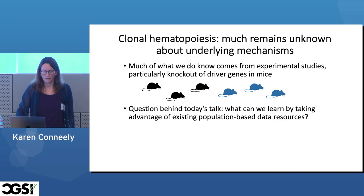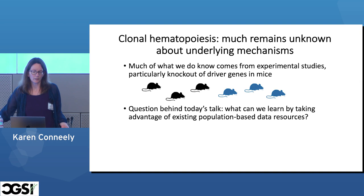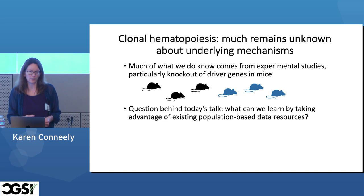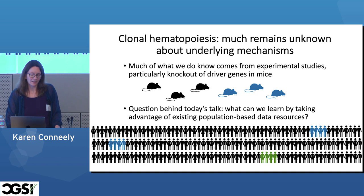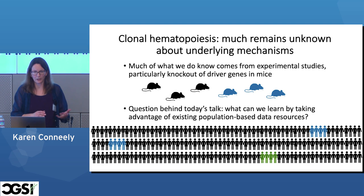A lot of what we know so far comes from experimental studies — these genes have been knocked out in mice and you can learn a lot from that. But an important question behind today's talk is: what can we learn about these mechanisms by taking advantage of existing population-based data resources? An advantage of these resources is the extremely large cohorts of sequenced individuals we can examine. Some disadvantages are that very few individuals in even large cohort studies harbor CHIP mutations, and within these individuals only a small proportion of their blood carries the CHIP mutation — unlike a knockout mouse where the gene would just be gone.